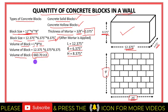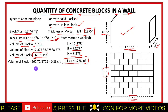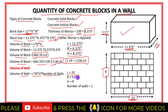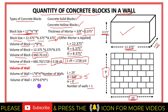Since 1 cubic foot equals 1728 cubic inches, the volume of a single concrete block is 0.38 cubic feet. Now I have to find out the volume of the wall using the formula: length × breadth × height × number of walls. The length is 25 feet, breadth is 6 inches (0.5 feet), height is 9 feet, and there is one wall. So the volume of the wall is equal to 112.5 cubic feet.